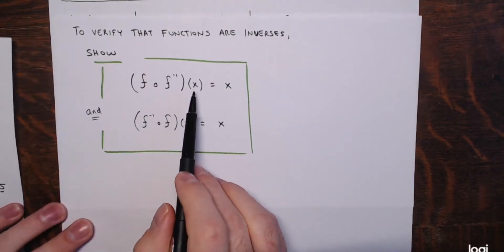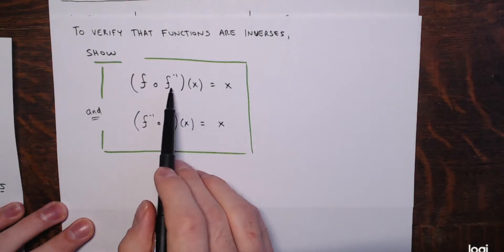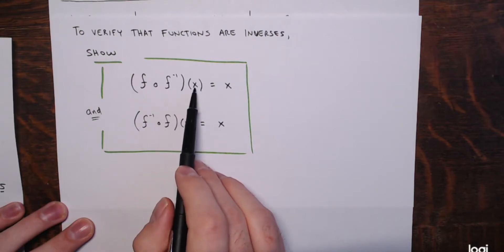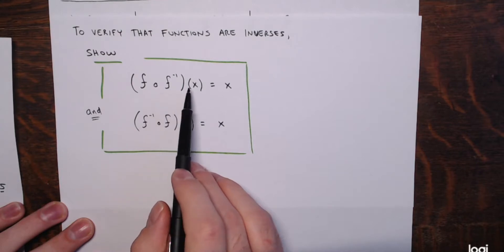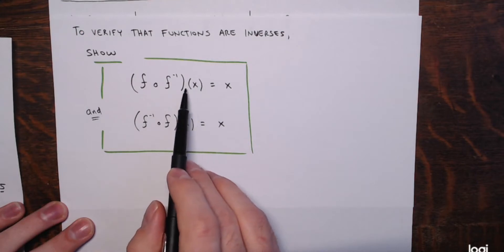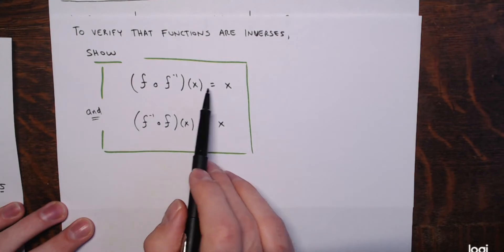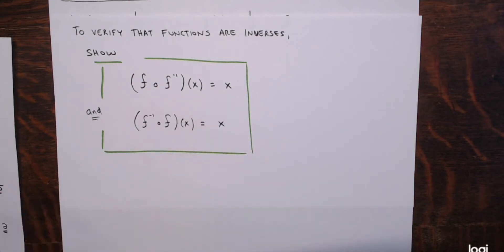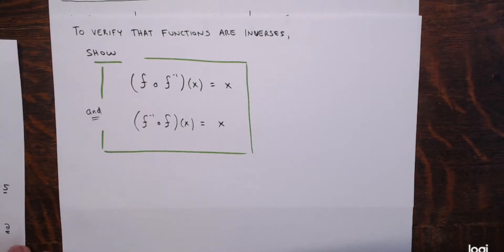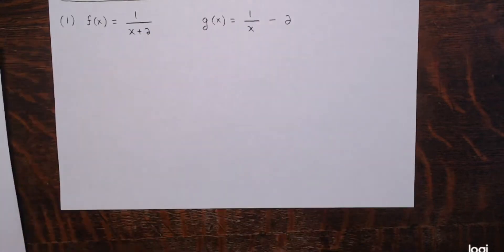That's as long as the value you're plugging in is in the domain of the first function. The value of x gets plugged into the first function, so it has to be in the domain of that function. If it is, you'll end up back where you started. So let's keep this composition rule in mind and go into our examples.